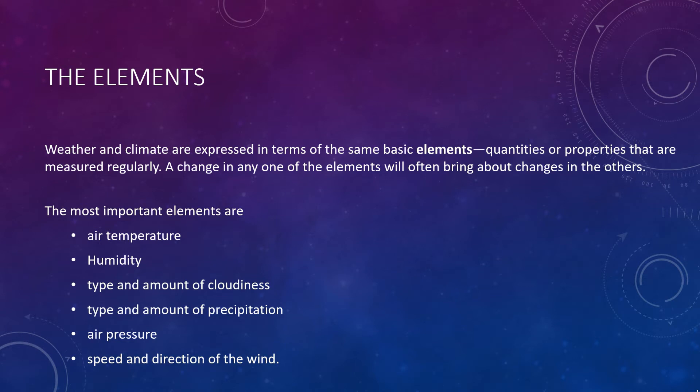Weather and climate are expressed in terms of some basic elements, that is, quantities or properties that are measured regularly. A change in one of these elements will often bring about changes in the others. The most important elements are air temperature, humidity, the type and amount of cloudiness, the type and amount of precipitation, air pressure, and the speed and direction of wind. These elements are the major variables from which weather patterns and climate types are deciphered, and we'll take a much closer look at most of these down the road.